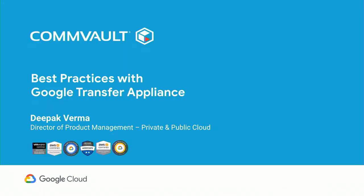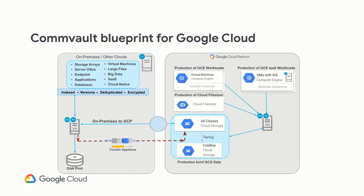With that, I'd like to hand over to Deepak, who will talk about one of the use cases for Transfer Appliance. I'm Deepak Verma, Director of Product Management at Commvault, one of the vendors that supports Transfer Appliance on-prem. At a high level, this is a blueprint architecture for what we can perform with Google Cloud. On the left side are customers running various workloads — VMs, databases, applications, not just flat files. Commvault's VSA component is capable of transferring or writing that data into a GCS bucket directly, and Transfer Appliance is supported as a mechanism to transfer large amounts of data.